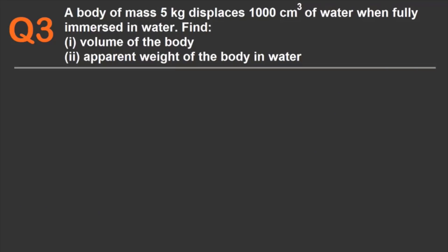Question 3. A body of mass 5 kg displaces thousand centimeter cube of water when fully immersed in water. Find the volume of the body and the apparent weight of the body in water. Let's say we have a beaker full of water as shown in the diagram. And there is another smaller beaker to collect the displaced water. Since the body is completely immersed in water...